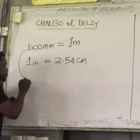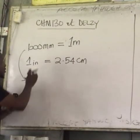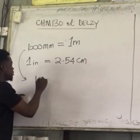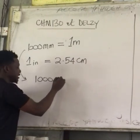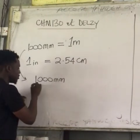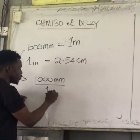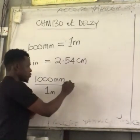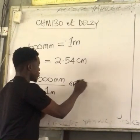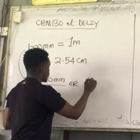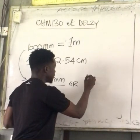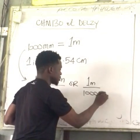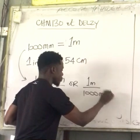Without wasting much time: for the first one, we can represent it as 1,000 millimeters over 1 meter, or 1 meter over 1,000 millimeters.